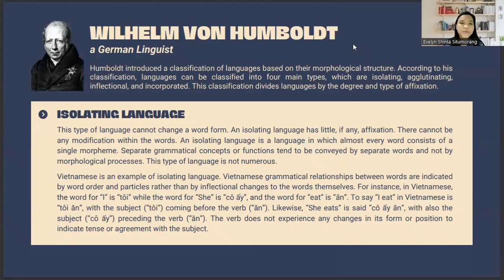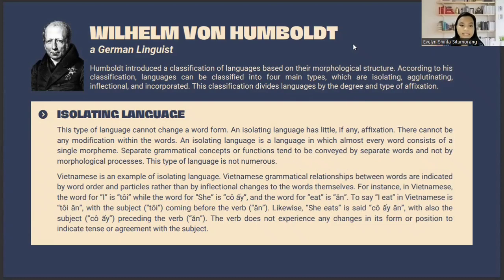Moving to the second figure, Willem van Humboldt, who was also a German linguist. He introduced a classification of languages based on their morphological structure. The first type is isolating language, where word forms cannot change and there is no modification within words. Separate grammatical concepts are conveyed by separate words. Vietnamese is an example: the word for 'I' is 'tôi', 'she' is 'cô', and 'it' is 'ăn'. To say 'I eat' is 'tôi ăn', and 'she eats' is 'cô ăn'. The verb does not change its form to indicate tense or agreement with the subject.